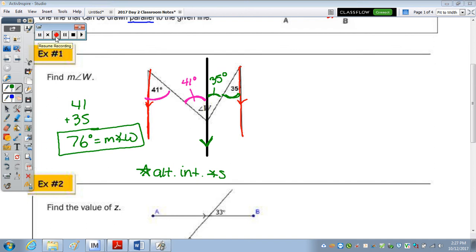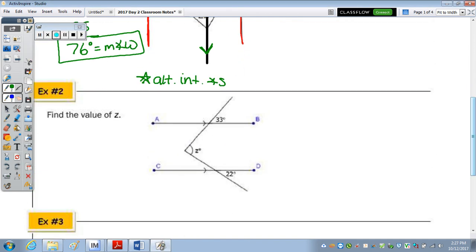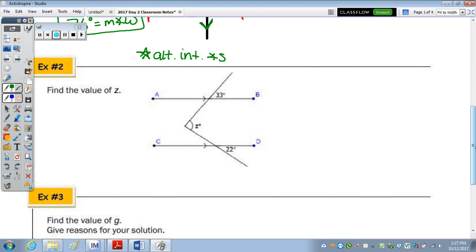And number two, we need to find the value of Z. So we're going to draw the line through the vertex of angle Z so that it's parallel, and I'm going to sketch it by hand this time. I'd like you to use your ruler. And I'm going to put on the line the arrow, so I'm telling the person grading my paper that I'm drawing it parallel rather than actually stating it in words.